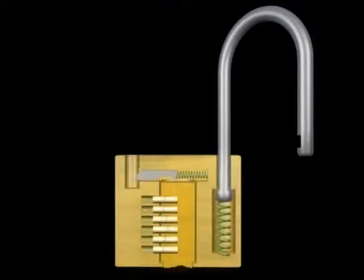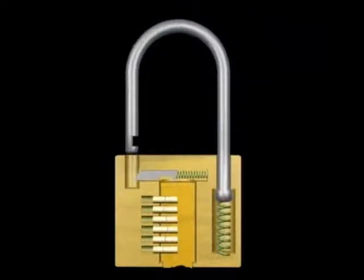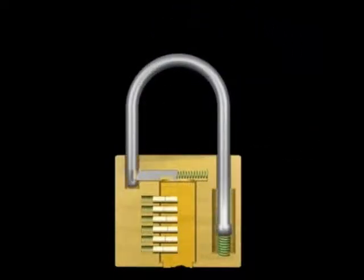Padlocks usually work by having a spring-loaded locking bolt fit into a notch in the shackle to hold it inside the lock. Often the locking bolt will have an angled top which allows the shackle to be closed without unlocking the lock.